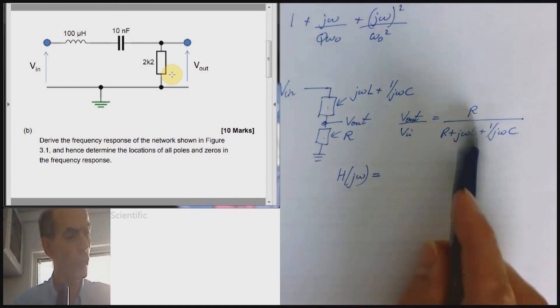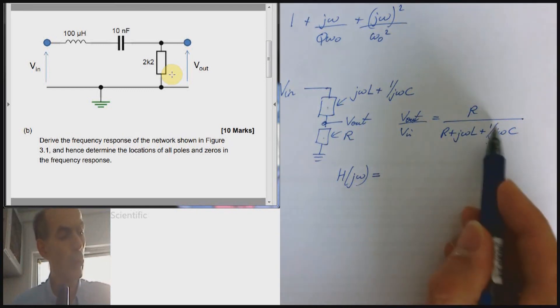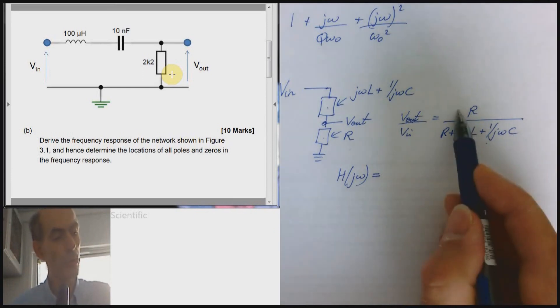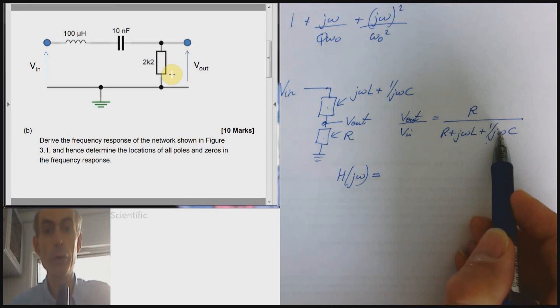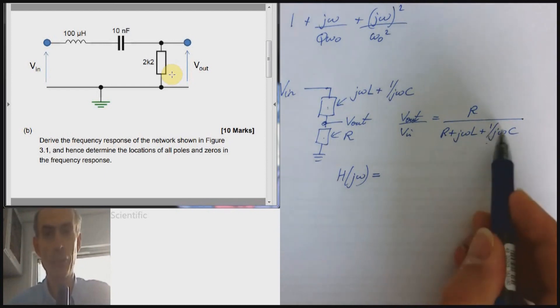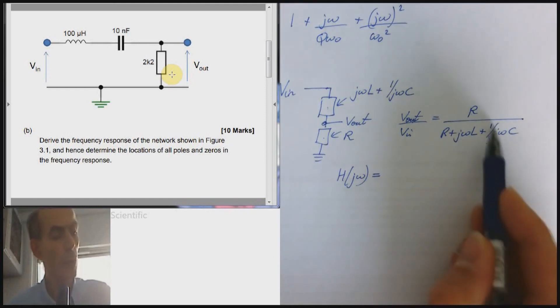Now, this is not in the standard form that we're looking for because we've got this term 1 over jωC. And what we need is to get both the numerator here and the denominator in the form of polynomials in jω. So the terms either don't have any jωs in them or they're jω or jω squared or jω cubed, that kind of thing. And we've got a term here in 1 over jω. Need to get rid of that.